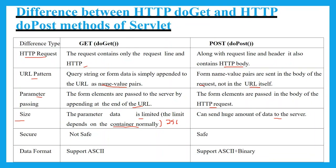Regarding security: the DoGet method is not secure because whatever values are entered — such as account numbers or passwords — are visible on the URL. This makes DoGet unsafe for login or transaction pages. The DoPost method is safer because the values are not embedded in the URL, so the user cannot see what has been passed. Regarding data format: DoGet supports ASCII values only, whereas DoPost supports both ASCII and binary values.